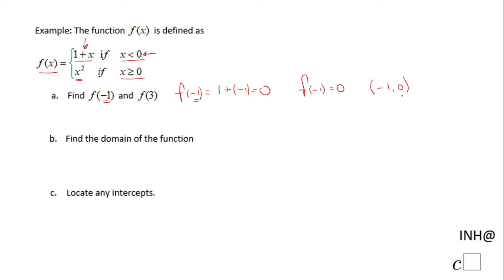On part a, we are asked to find f of negative 1. Negative 1 is a number that is less than 0, so we're going to use the first piece of the piecewise function. We have 1 plus negative 1, and that is 0. So f of negative 1 is 0, or the ordered pair is (−1, 0).